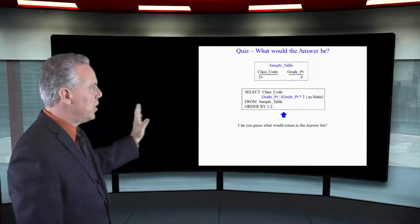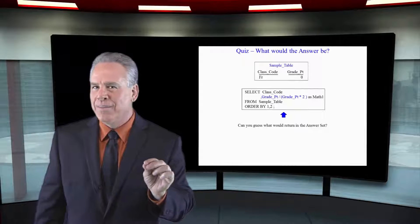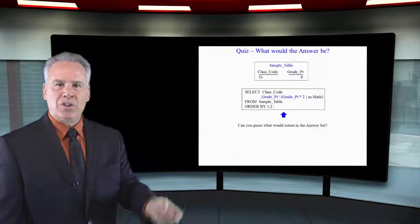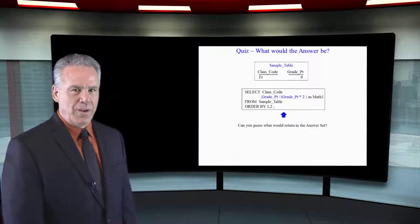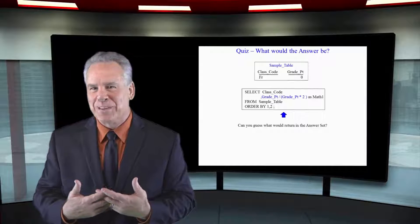Now look at the query. I'm going to select the class code and then the grade point divided by the grade point times two from my sample table. What do you think is going to happen and what will the results be from this query?